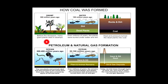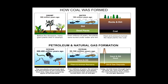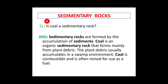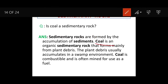About 30 million years ago, before the dinosaurs, many giant plants died in swamps and decayed. Plants and animals died, and rock and dirt led to the formation of coal. Coal is basically formed of plant debris. Coal is an organic sedimentary rock, which falls under the category of organically formed sedimentary rocks.